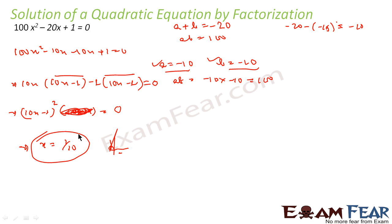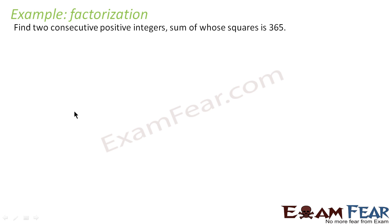Please note: here there is only one value of x, not two, because with (10x minus 1) squared the only possible option is x equals 1/10. So in a quadratic equation, we have seen it can have one solution, two solutions, or zero solutions. This is one example where it has one solution.